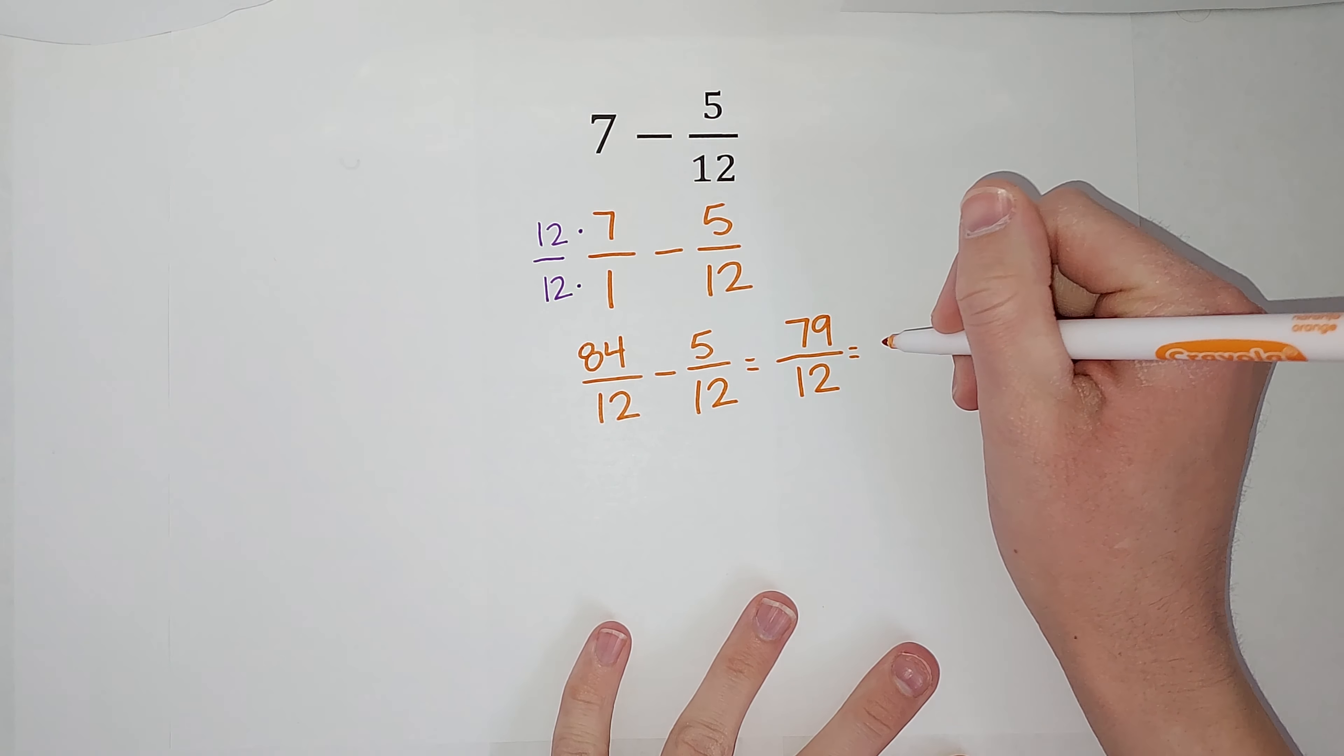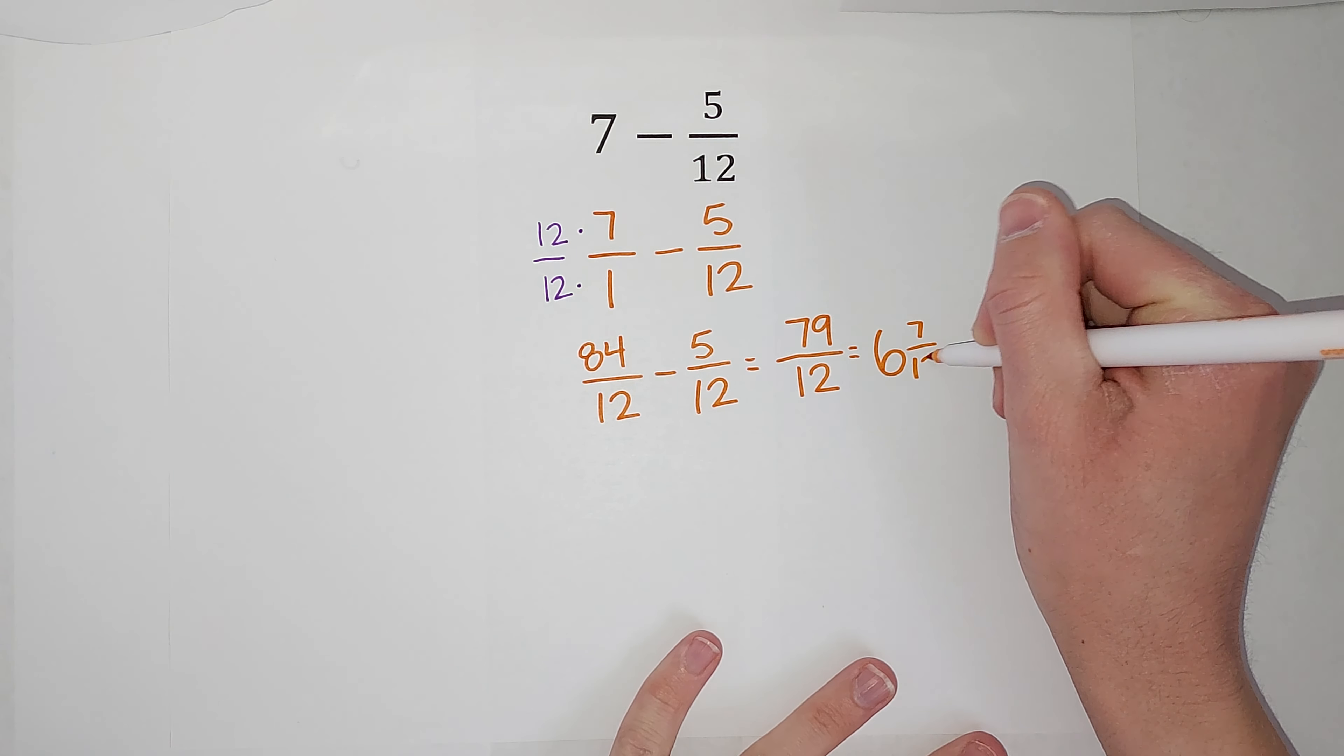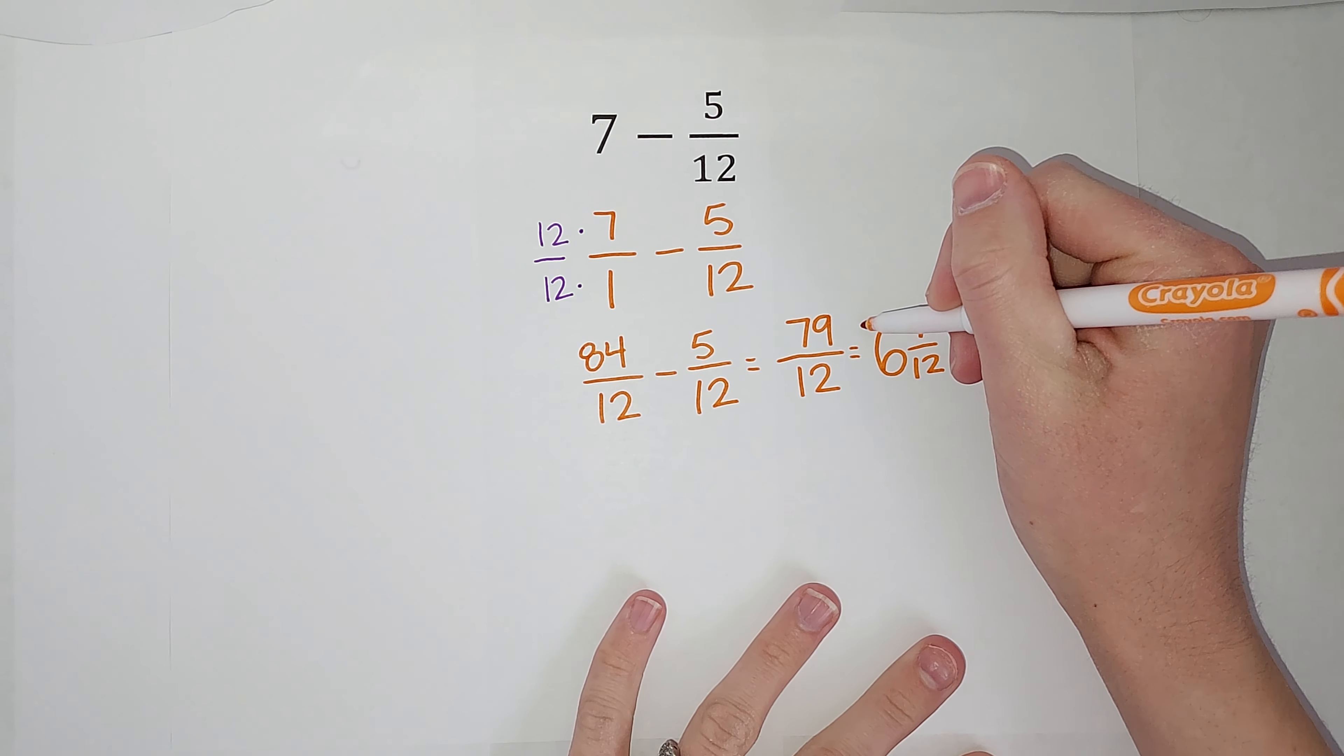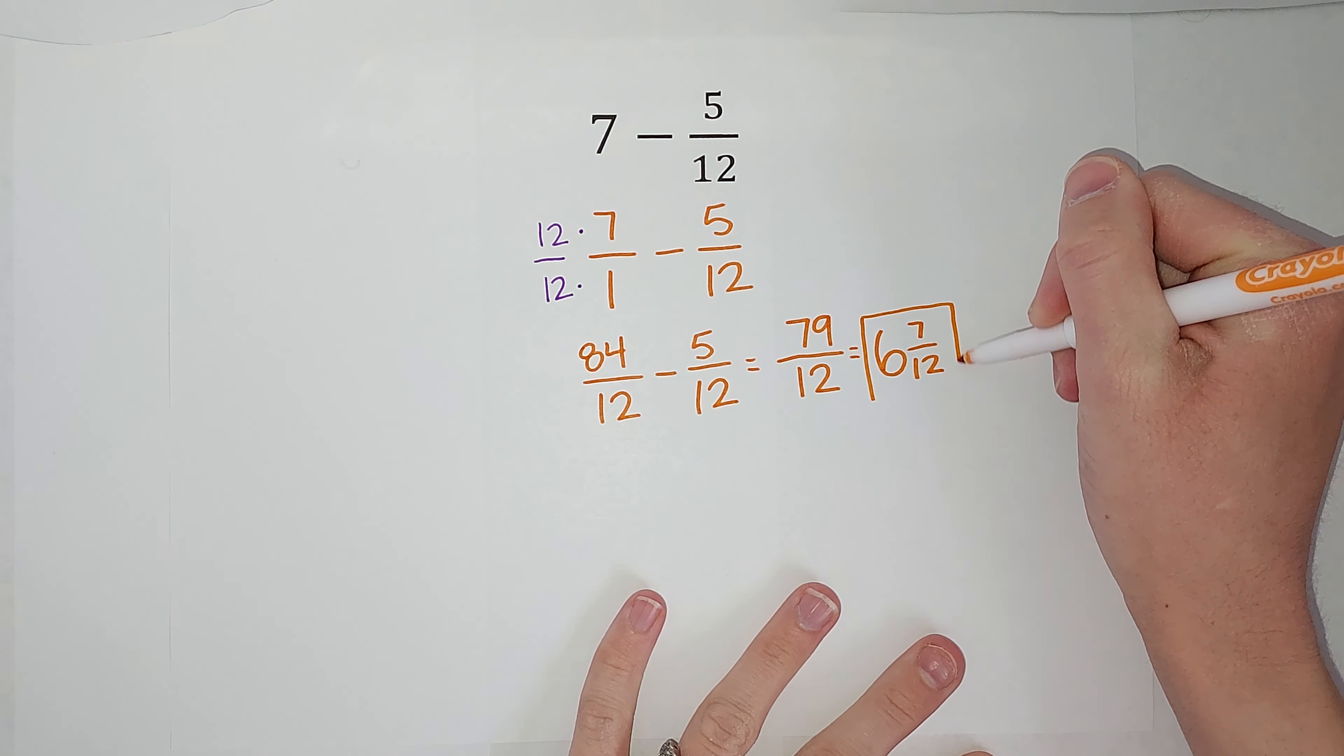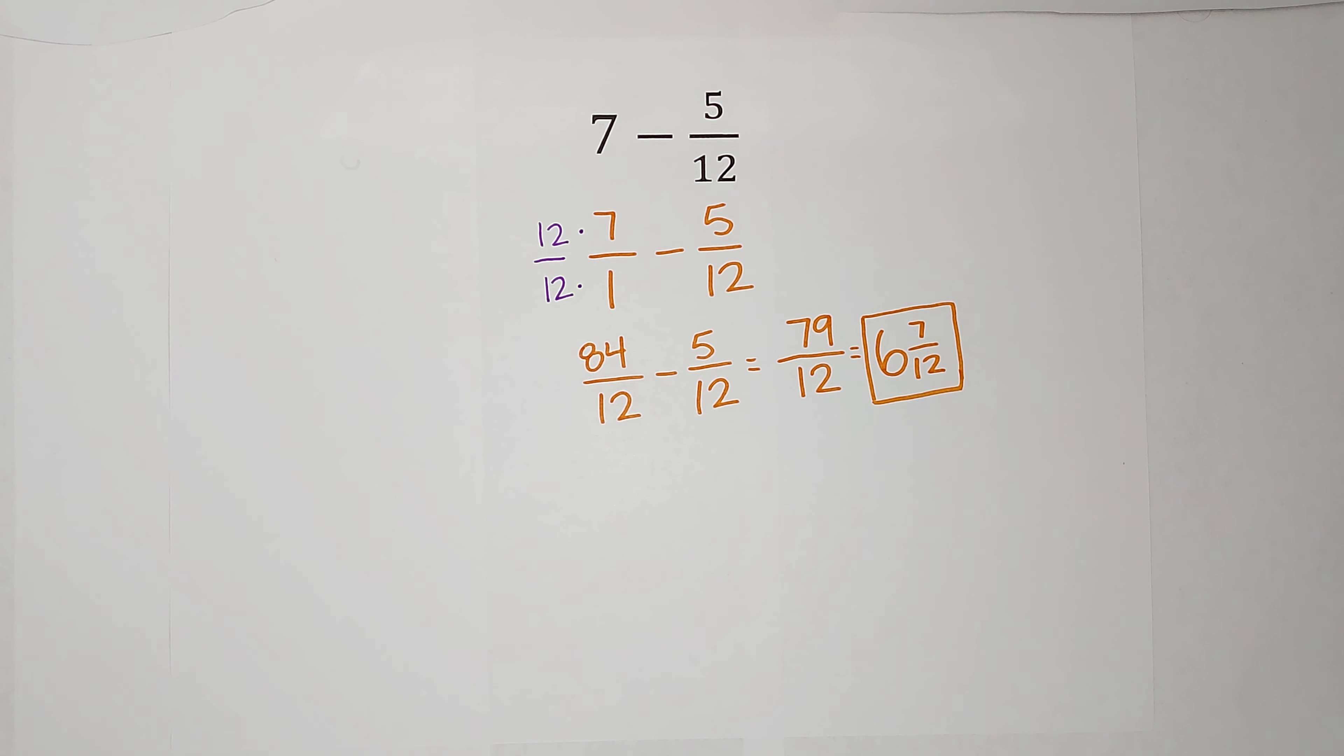And then how many are left over? There's 7 left over. And we are still in twelfths. So this fraction and this fraction are the same. But a lot of times we like our answers like this. So 7 minus 5 twelfths gives me 6 and 7 twelfths.